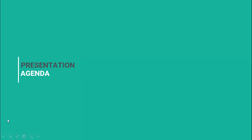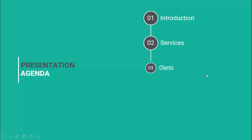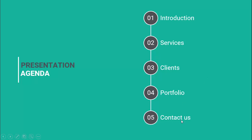In today's tutorial I'm going to show you how to create an agenda template in PowerPoint. This is how the slide works: when I click, this line moves and then it will reveal the headline. I've put 'Presentation Agenda' here, which can be changed depending on your requirement. When I click it will show me the first agenda item — Introduction — then the second: Services, Clients, Portfolio, and Contact.